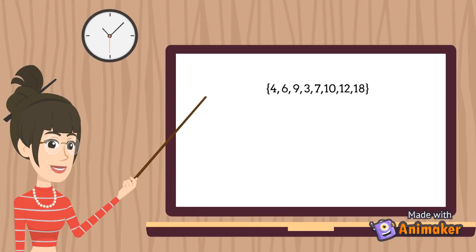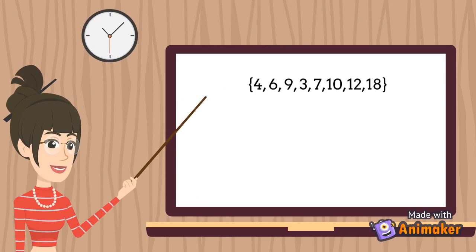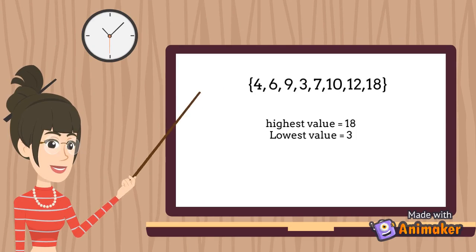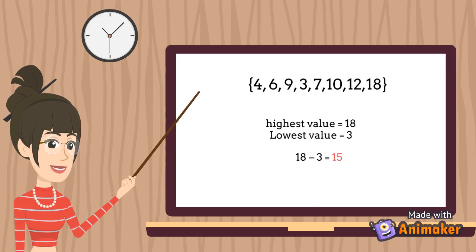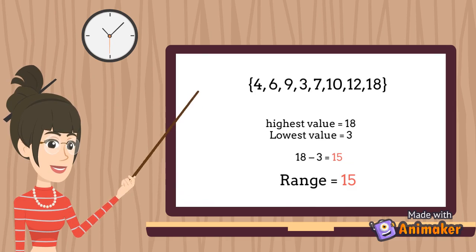Let's have another example. In the data set 4, 6, 9, 3, 7, 10, 12, and 18, the highest value is 18 and the lowest value is 3. So the range is 18 minus 3 equals 15. Therefore, our range is 15.